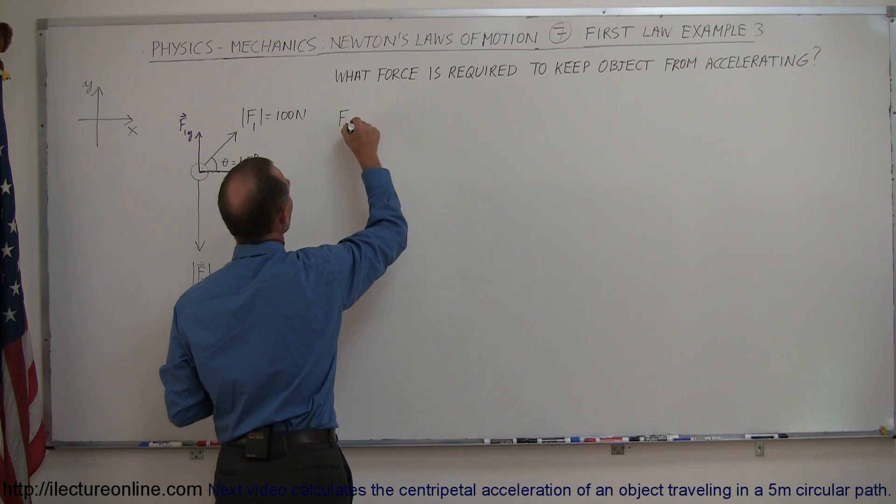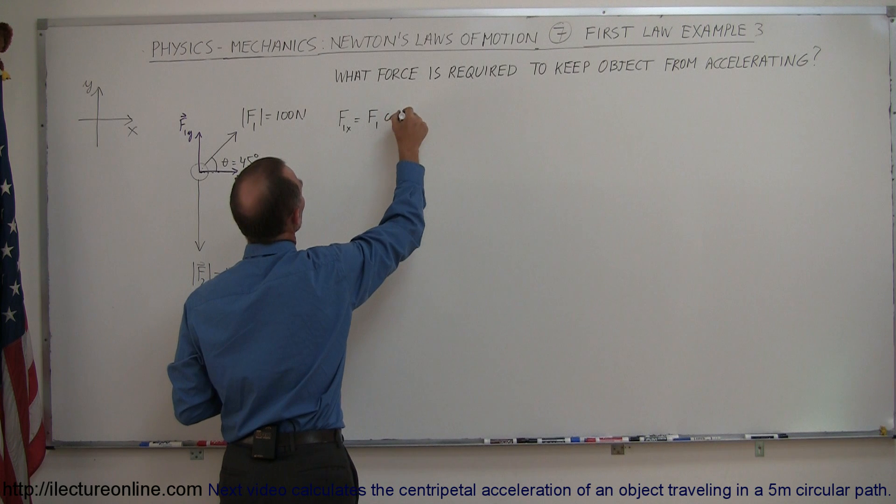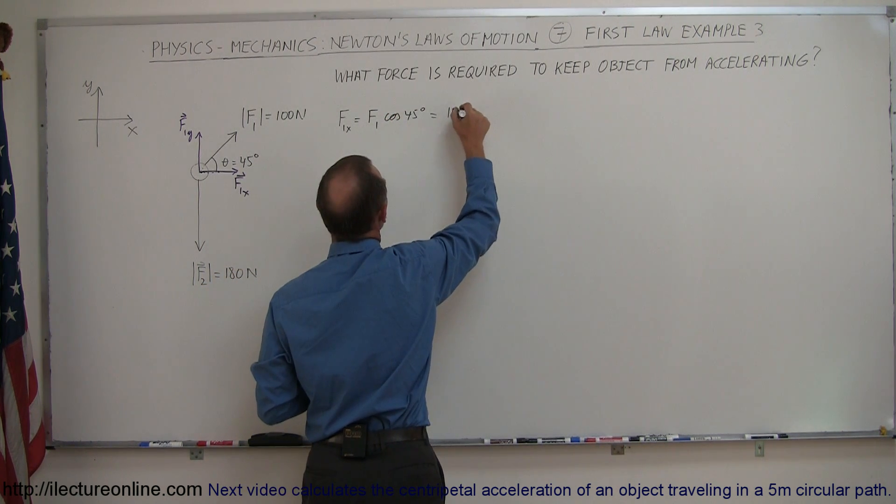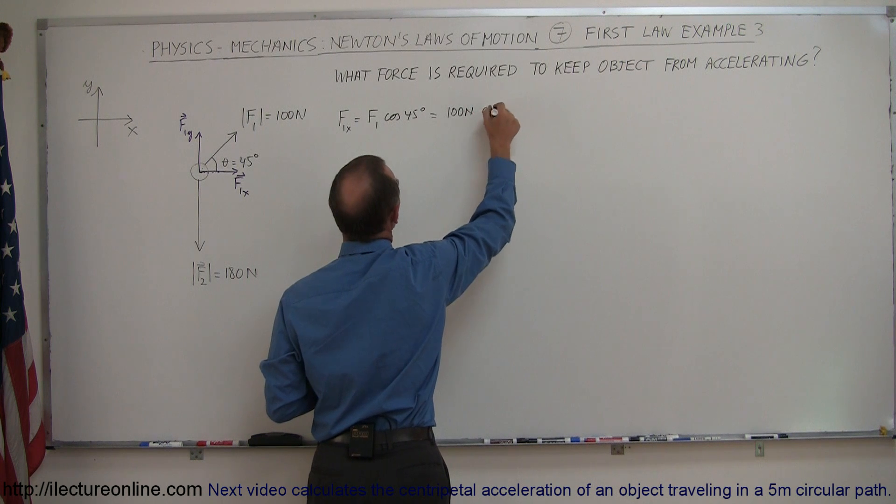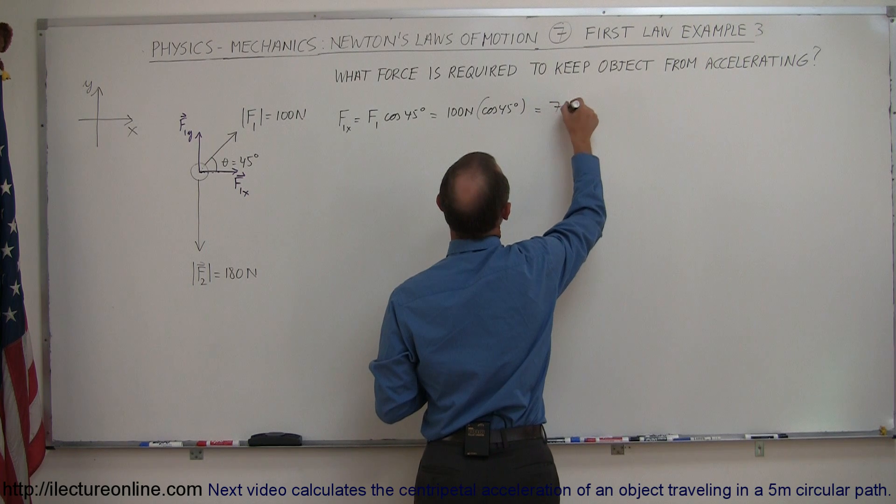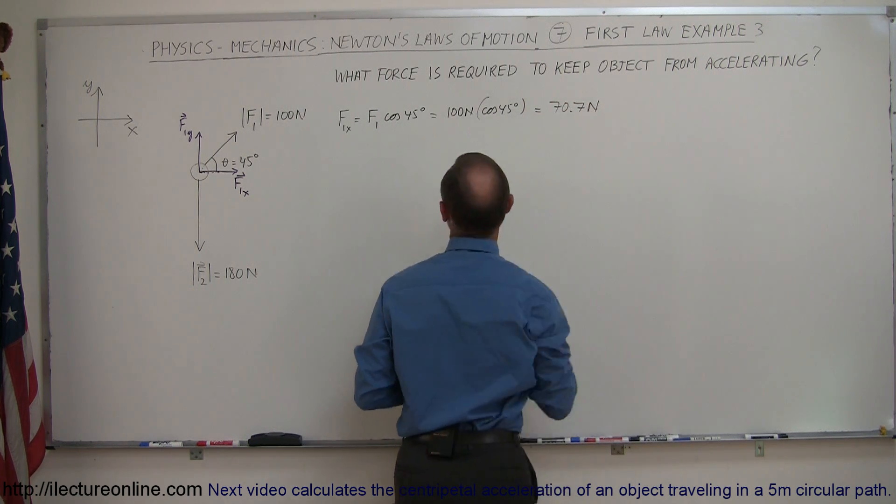So F1 in the X direction is equal to F1 times the cosine of 45 degrees. So in this case, it's equal to 100 Newtons times the cosine of 45 degrees, which is 0.707, which would be equal to 70.7 Newtons.